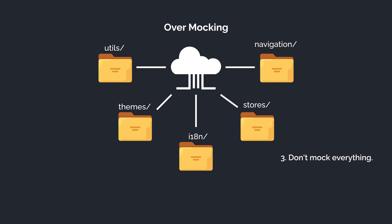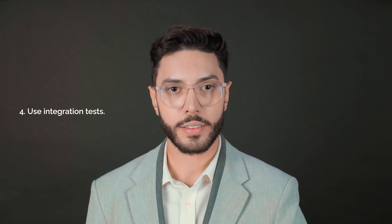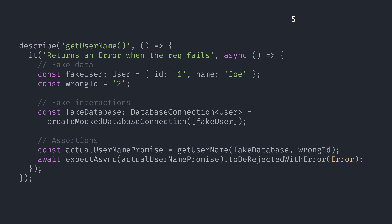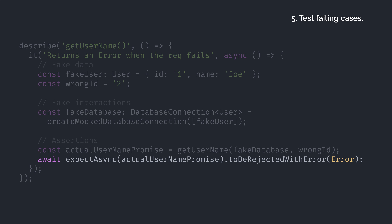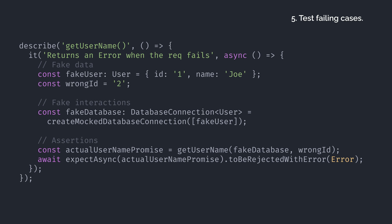Third, don't mock everything — this is an anti-pattern. If everything is mocked, we may test something quite different from the production environment. The more you mock, the less confidence you have in that test. If you mock everything, it provides no confidence that it will work in the production environment. Fourth, use integration tests. If you care about how your code interacts with other modules, you should do integration testing rather than mocking. Fifth, test failing cases. While creating your mocks, don't forget to simulate errors and test error handling. You can even add expectations that some methods or API calls should not be made in case of an error.